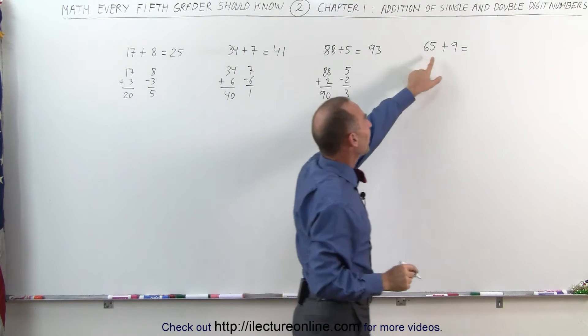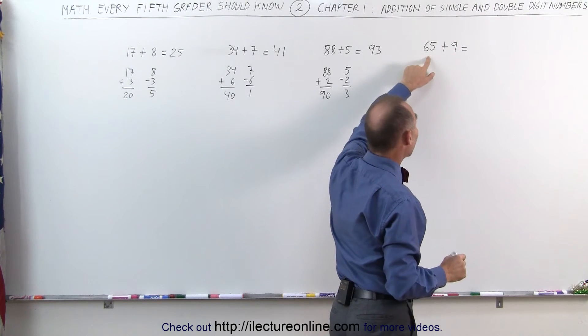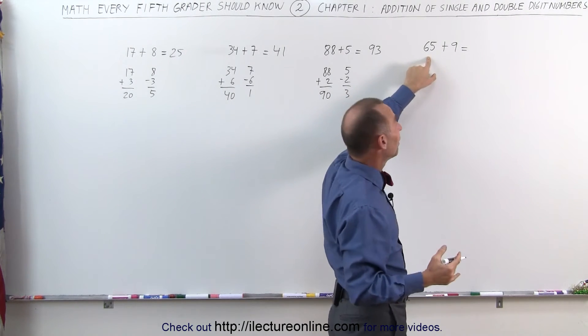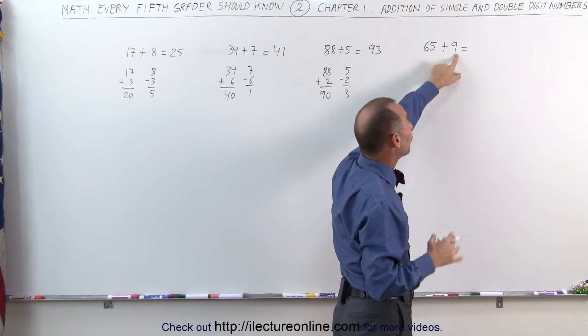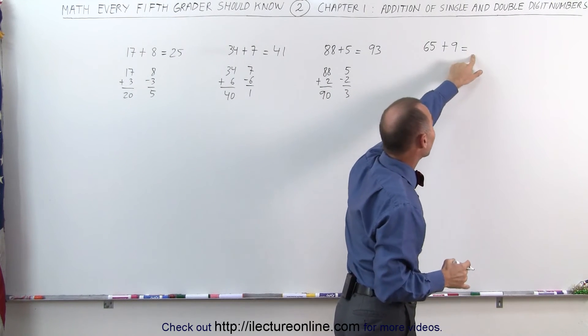Next problem: 65 plus 9. Well, if I add 5 more to 65, that gives me 70. 5 subtracted from 9 gives me 4. 70 plus 4 gives me 74.